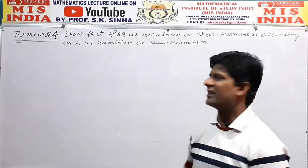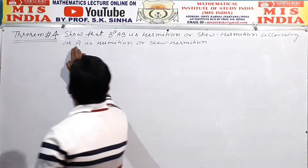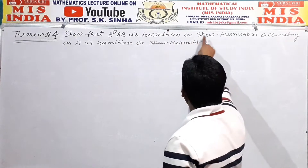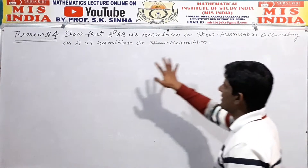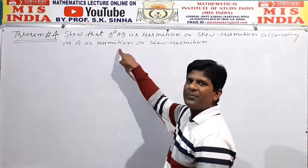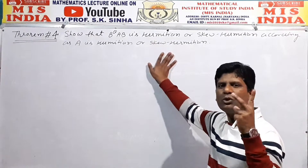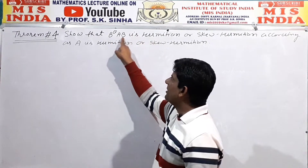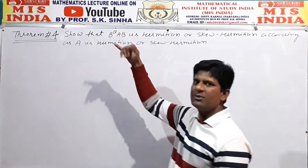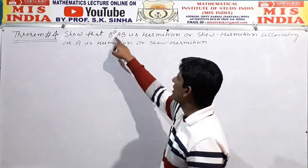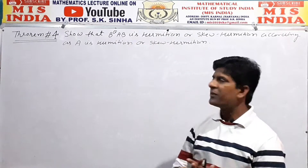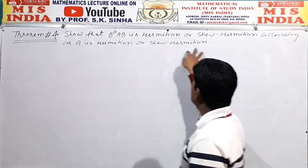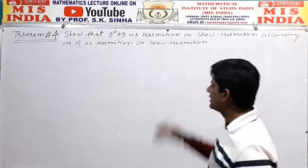So students, the theorem is: show that B raised to power theta, A, B is Hermitian or skew-Hermitian according as A is Hermitian or skew-Hermitian. So there are two parts of this question. We have to show that B^θ AB is in Hermitian form.